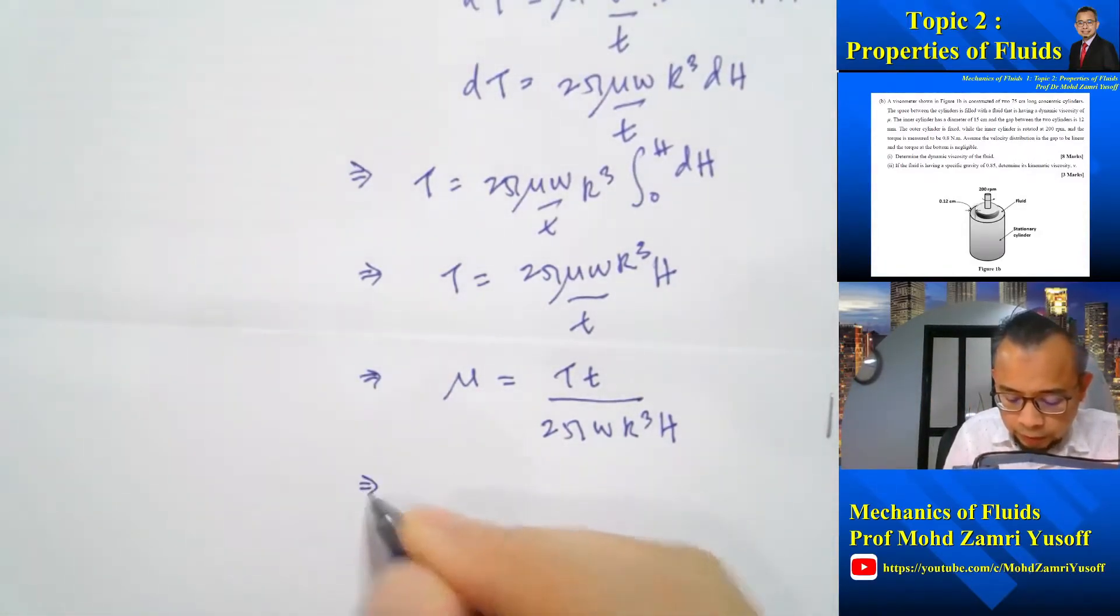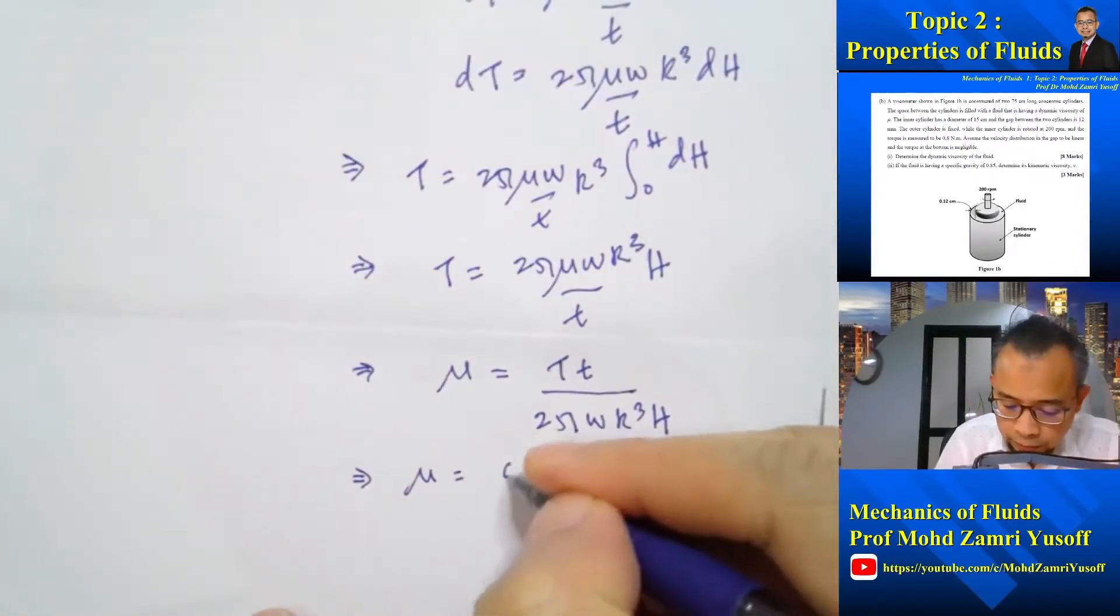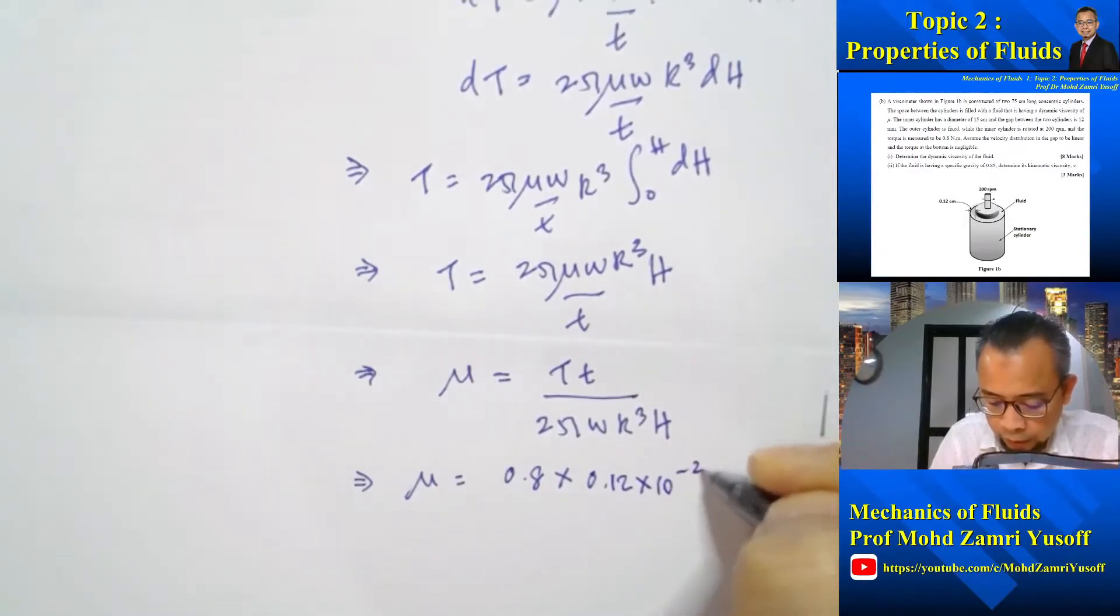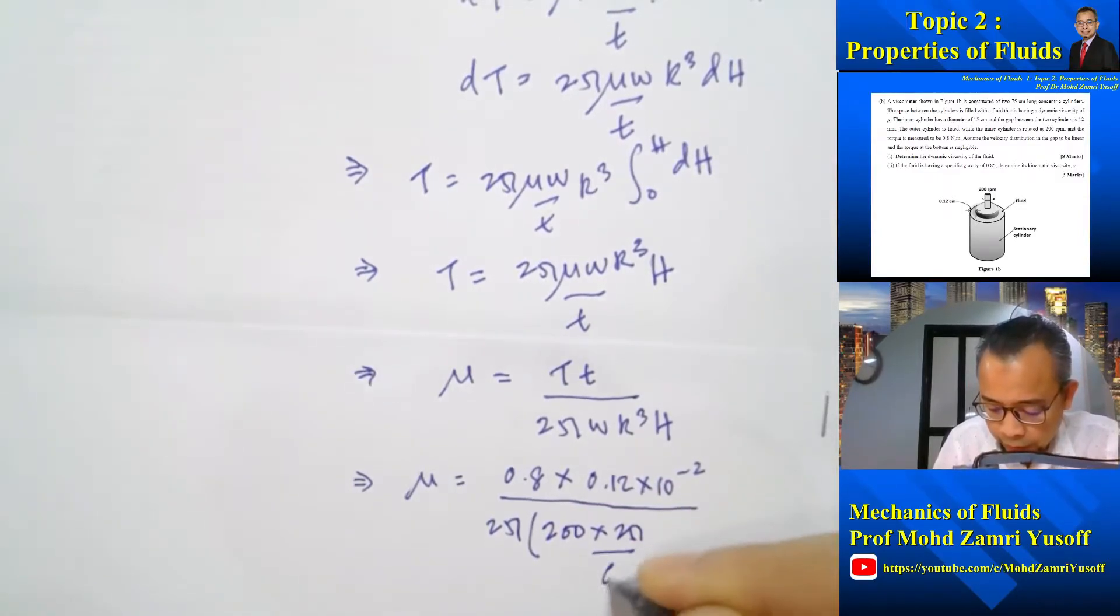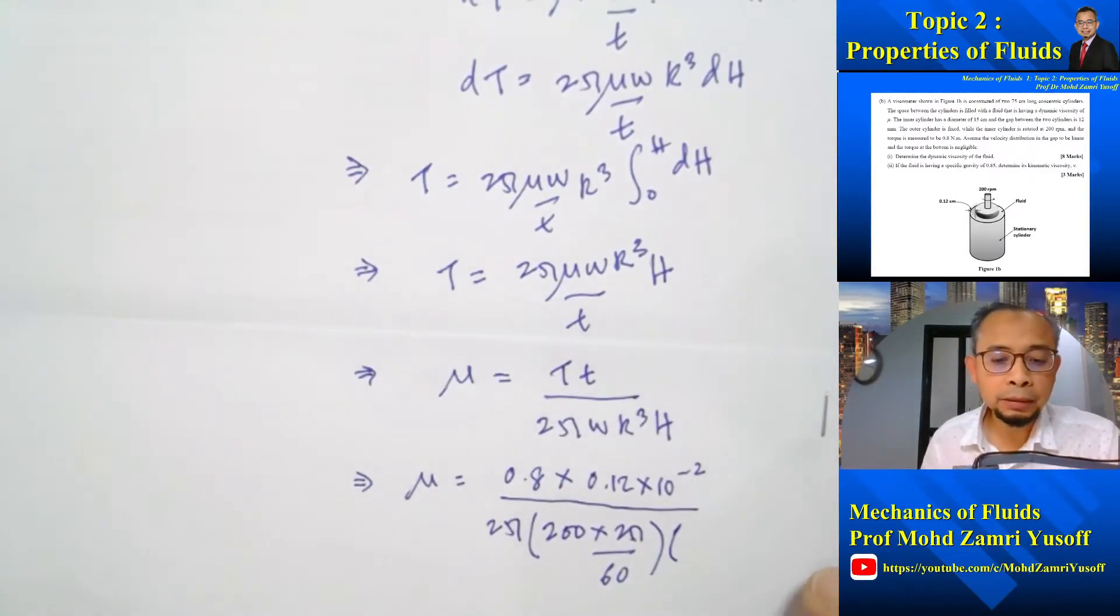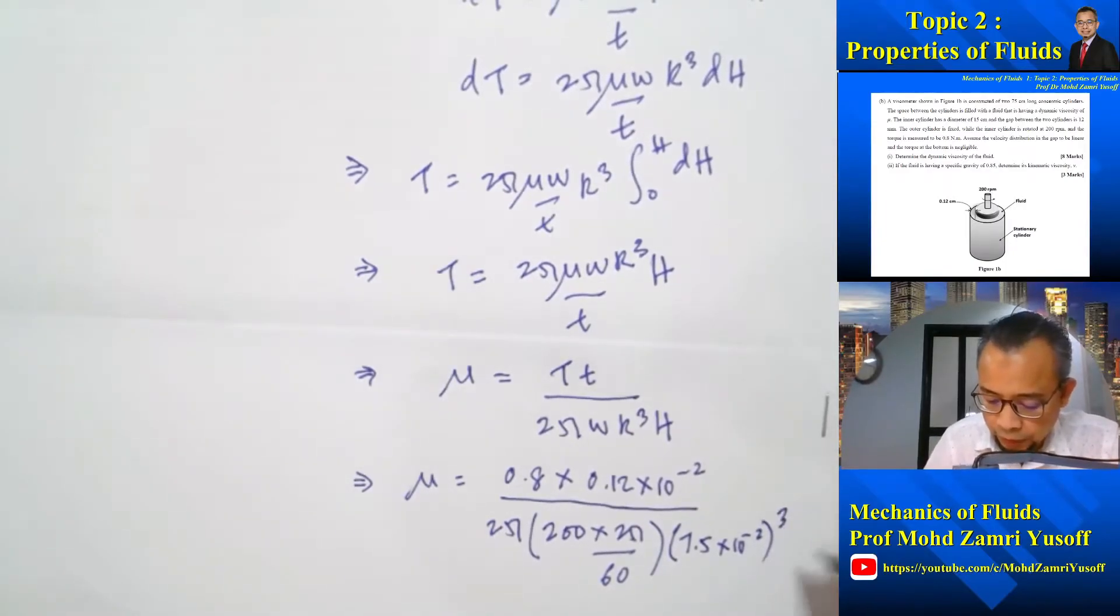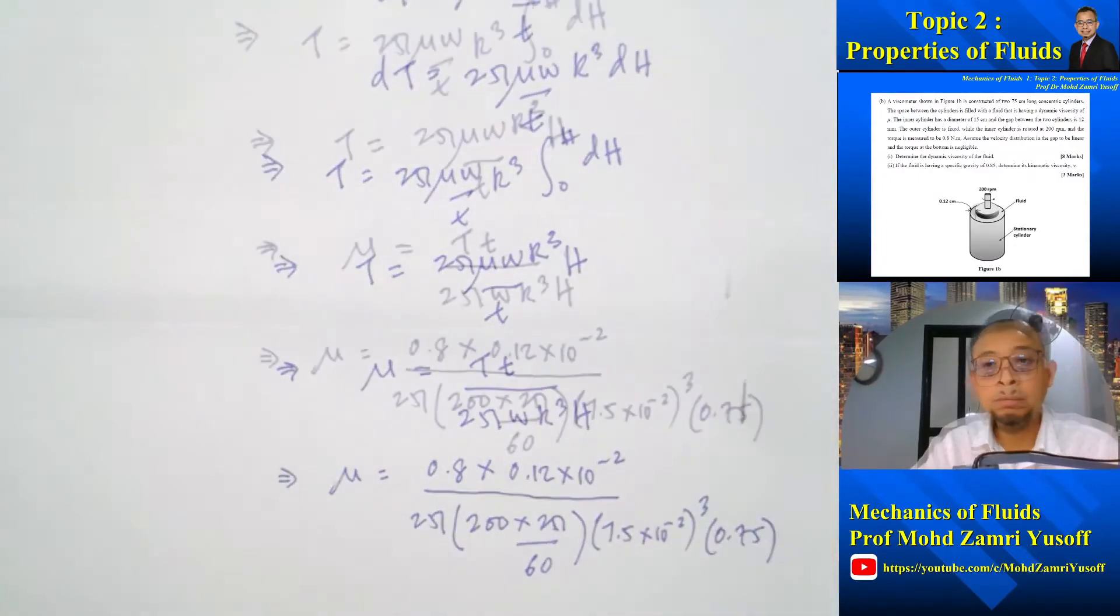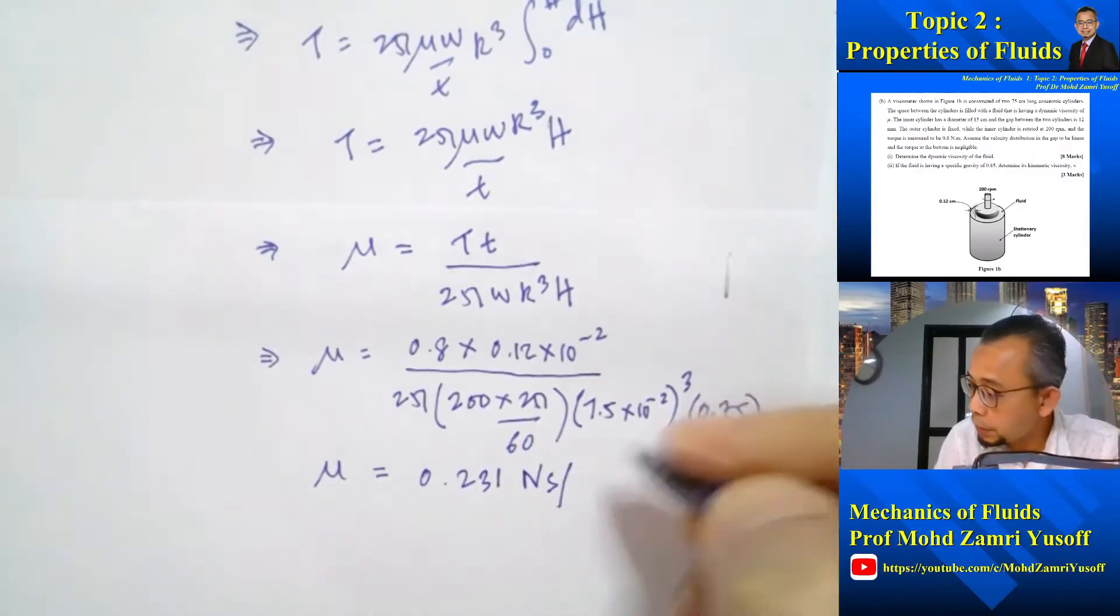So now I can get value of mu. The torque is given as 0.8, multiply by the spacing 0.12 cm, divided by 2 pi. Omega is 200, so I have to change that to radians per second, so 200 multiplied by 2 pi by 60. Radius is equal to 7.5 cm, so 7.5 by 10 to minus 2 to the power of 3, and H is 0.75 meter. So that gives mu is equal to 0.231 Newton second per meter squared.